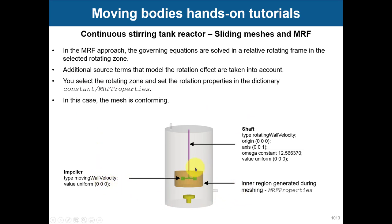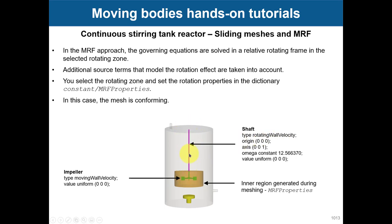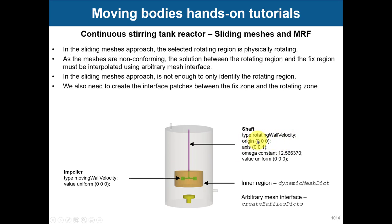We do not use the dynamic mesh dictionary for MRF — we use the MRFProperties dictionary. Here you simply do the cell selection. The cell set is already created at mesh time — see supplement two for how this is done. It must be created at mesh time, or you can use topoSet to create it. You assign MRFProperties, and remember that for the impeller, you use movingWallVelocity. On the shaft, you can also add rotatingWallVelocity to have physical sense — if this is rotating, the shaft should be rotating too.